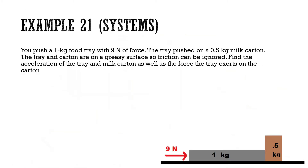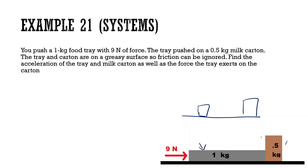You push a one-kilogram food tray with nine newtons of force. The tray pushes on a 0.5-kilogram carton. The tray and carton are on a greasy surface, so friction can be ignored. Find the acceleration of the tray and milk carton as well as the force the tray exerts on the carton. I'm going to draw two free body diagrams — one for the tray and one for the milk carton.